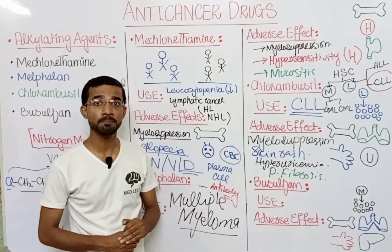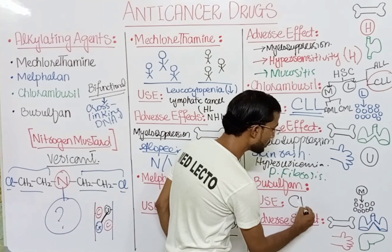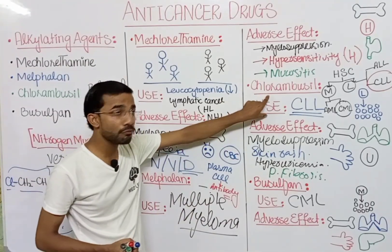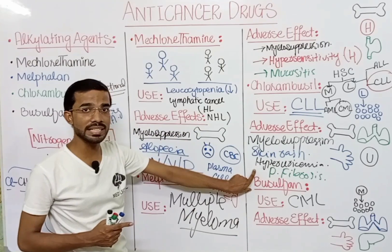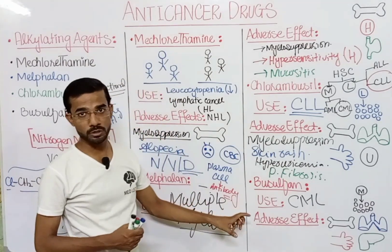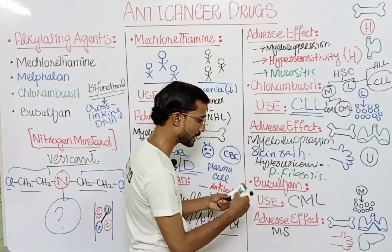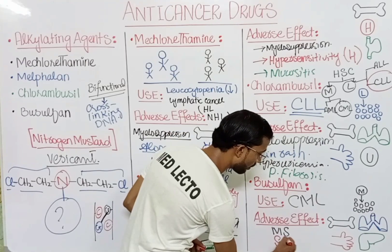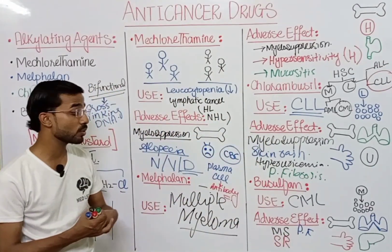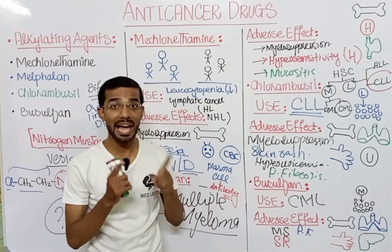Last is busulfan, which is used in the treatment of chronic myelogenous leukemia (CML) — the myeloid lineage. So chlorambucil targets the lymphoid lineage (chronic state) while busulfan targets the myeloid lineage. Adverse effects include myelosuppression, skin rash, pulmonary fibrosis — sometimes specifically called busulfan lungs — and hepatotoxicity.